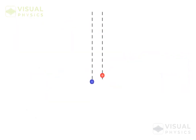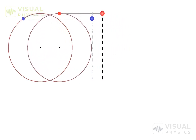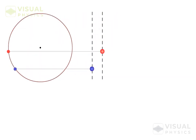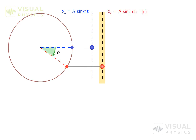We had also discussed that when two SHMs have a phase difference, this means that their corresponding circular motions have a phase difference. If we represent one SHM by such an equation, then the SHM which is behind the first one by a phase of φ will be represented by this equation.